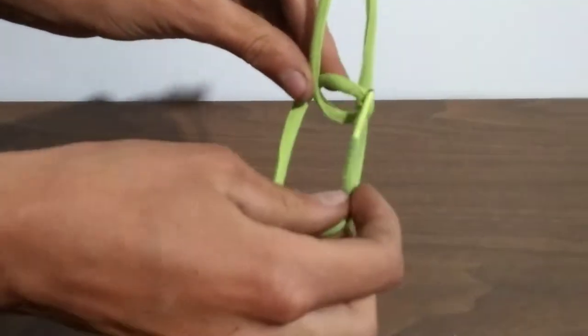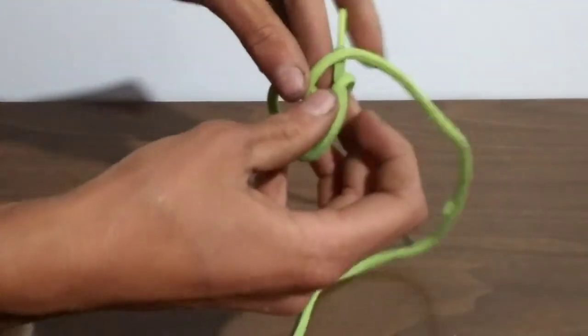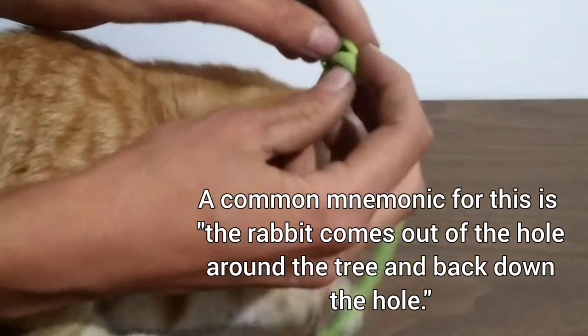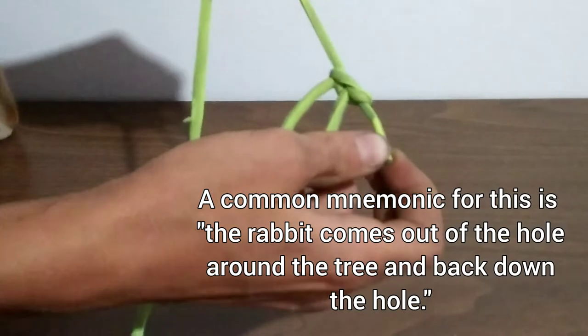It is a relatively simple knot but very effective. An easy way to remember this is that the rabbit comes out of the hole, around the tree, and back down the hole.